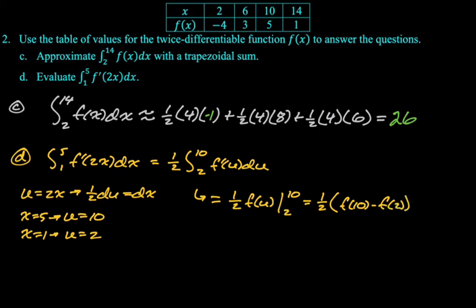So we have that. And then we can just read the values in the table. f of 10 looks like it is, f of 10 is 5. And then f of 2 is negative 4. So 5 minus negative 4, which is going to be 9 over 2. And that's it. So hopefully I fixed part c there. The rest of it, I think, went pretty well. That's the entire problem set. I hope this was helpful, and good luck.